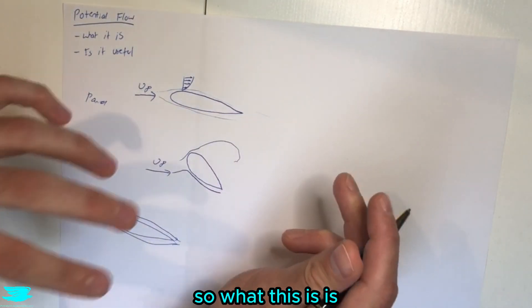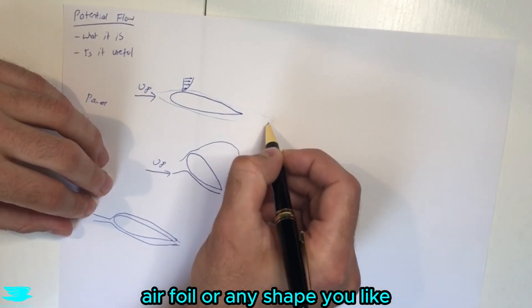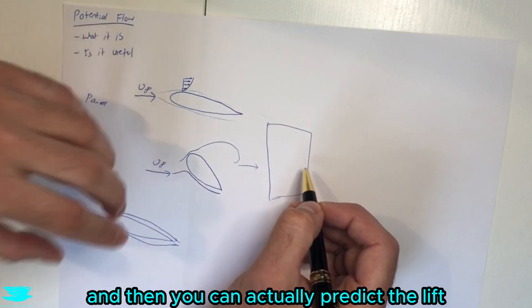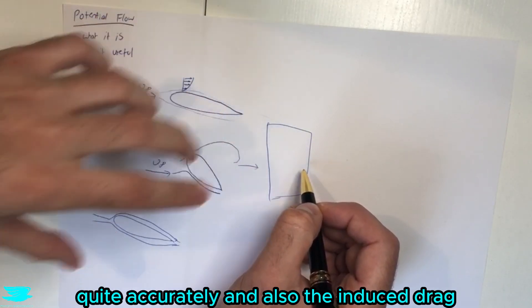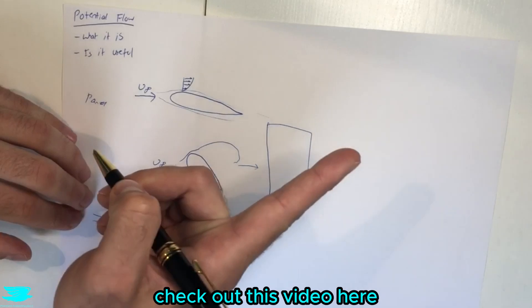So what this is, is effectively an inviscid solver, and you can put an airfoil or any shape you like really in the flow and the flow comes over it. And then you can actually predict the lift quite accurately and also the induced drag. So if you don't know what the induced drag is, check out this video here.